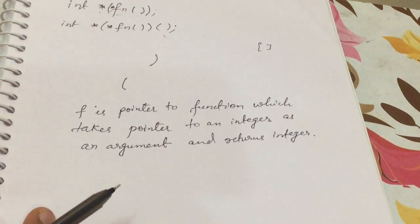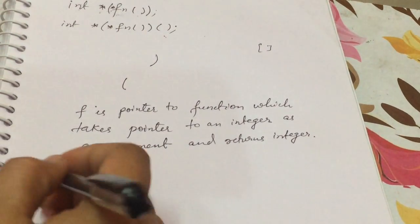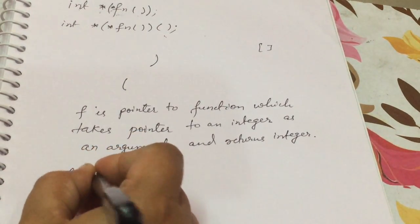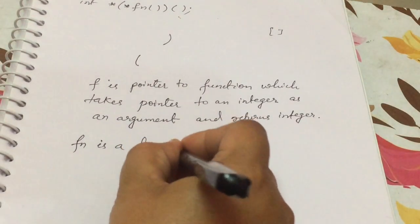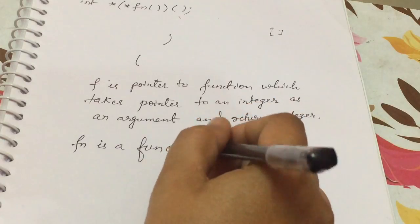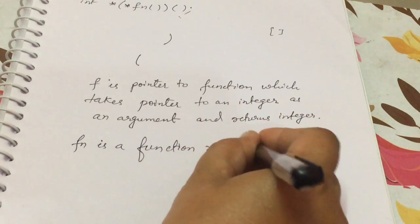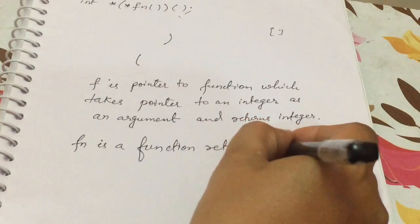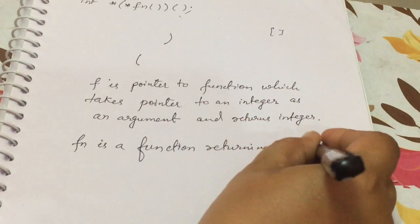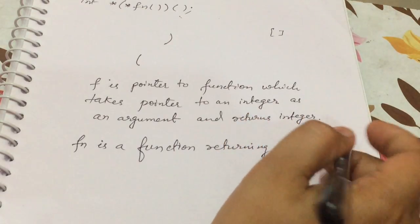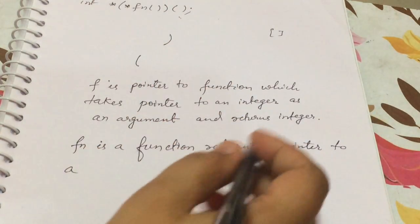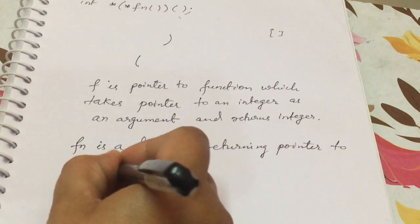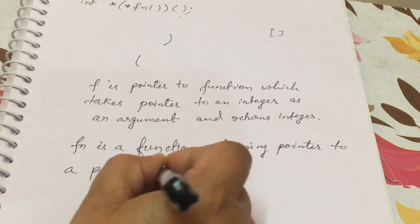So what we can write for this declaration is: fun is a function returning pointer to a pointer to an integer.